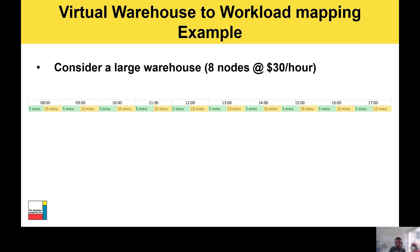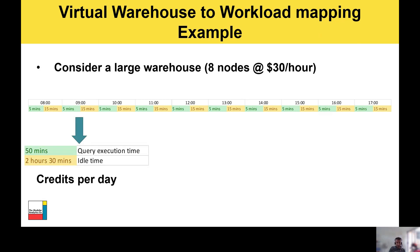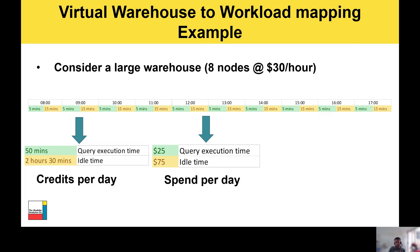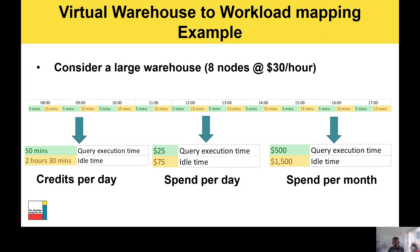Every hour you have five minutes of query execution time, followed by 15 minutes of the warehouse sitting idle. Every day that's 50 minutes of actual execution time where you're getting real value, and two and a half hours of idle time. Translating that into spend, you're looking at $25 a day for actual query execution and $75 a day for idle warehouse time. Extrapolated over a 20-day working month, those costs become quite significant — so it's really important to evaluate your workloads and ensure your auto-suspend is set correctly.